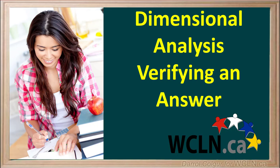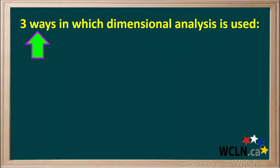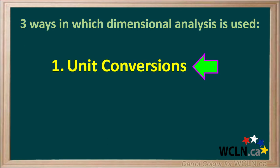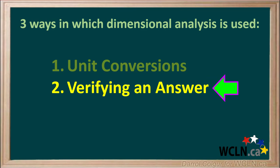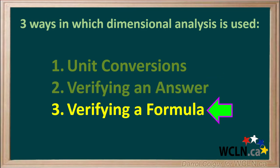How do we know if we set up a calculation correctly? We can use dimensional analysis. There are three main things we can use dimensional analysis for. One is doing unit conversions. Another is verifying an answer in a calculation. A third use is verifying a formula to make sure it's correct.